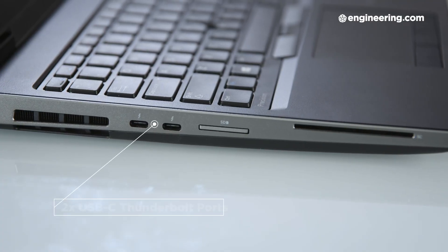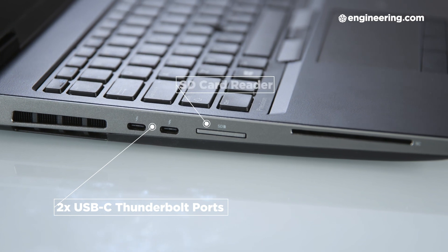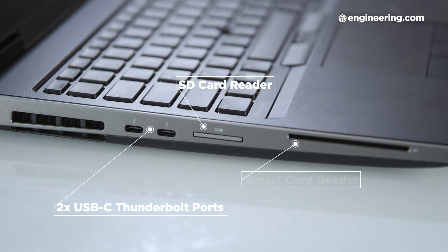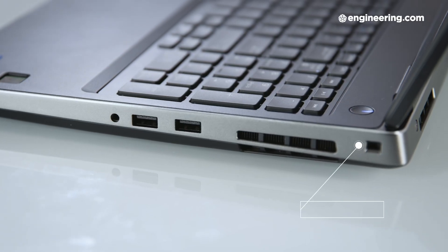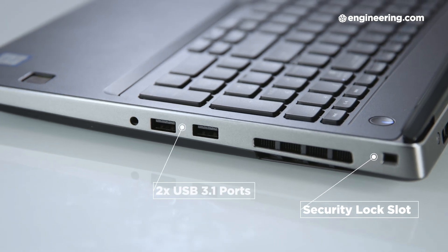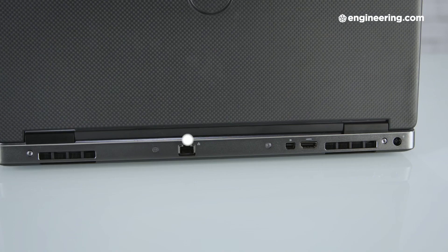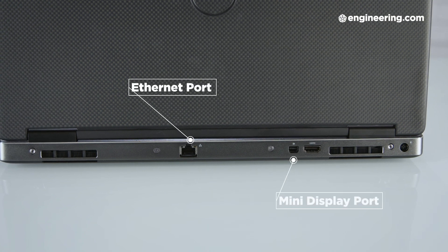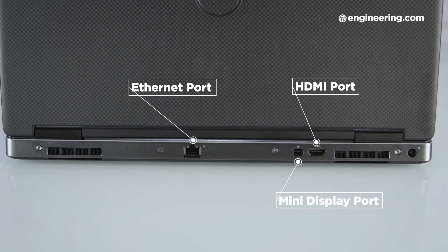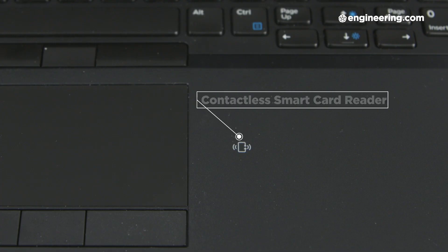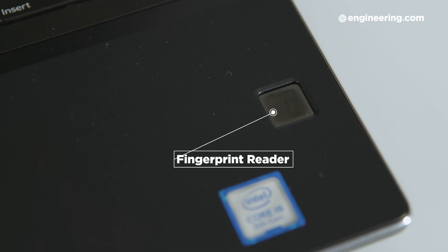The 7530 also has a great selection of connectivity ports. On the left side, there are two USB-C Thunderbolt ports, an SD card reader, and an optional smart card reader. On the right, there's a security lock slot, two USB 3.1 ports, and a headphone jack. And on the back, there's an Ethernet port, a mini display port, an HDMI port, and the power plug. You can also get the 7530 with a contactless smart card reader and a fingerprint reader, both of which go below the keyboard.